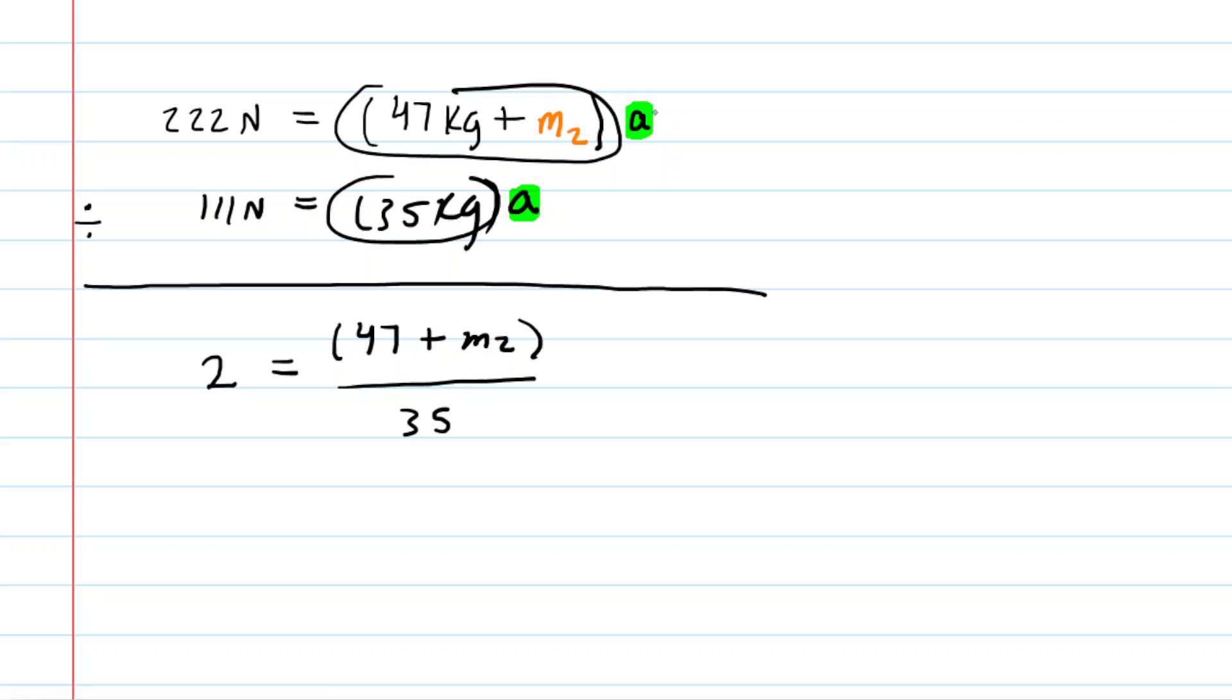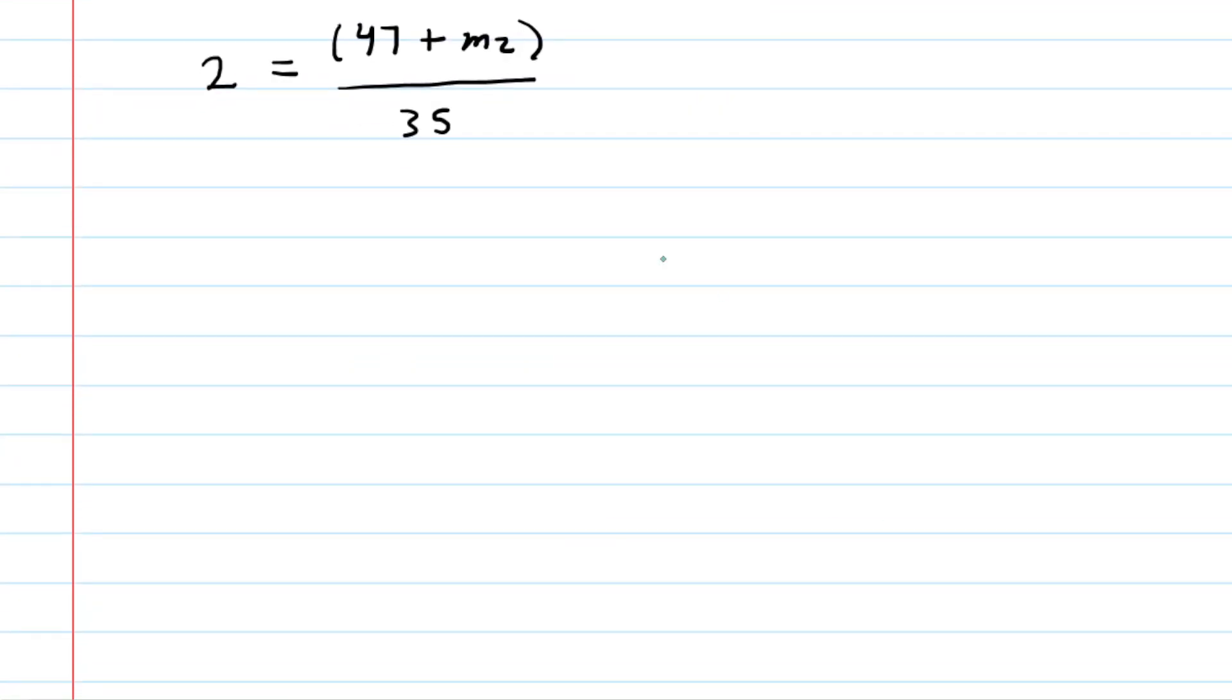And then, here's what's neat. When we divide, the accelerations cancel. This acceleration divided by that acceleration would be equal to one. So technically, we're multiplying this by one, which doesn't change the value on the right side. So we don't even have to write down that one. And now we are in business because we're going to be able to solve for m2 very nicely.